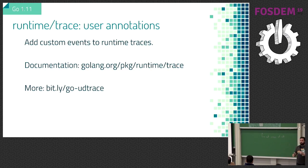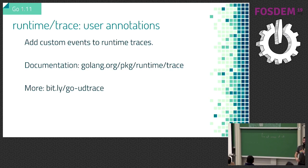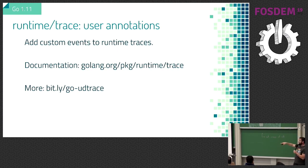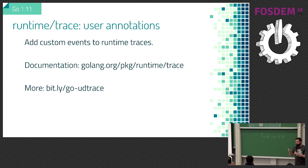Runtime and trace. If you've ever used the Go runtime tracer, you know it generates events for every single thing that happens — starting a goroutine, blocking on a channel, garbage collector, etc. Now you can log your own things too. That's useful if you want to understand what's going on with events that are not runtime events but ones you personally care about. There's a good blog post at bit.ly/go-ud-trace for user-defined traces.